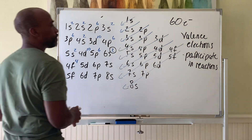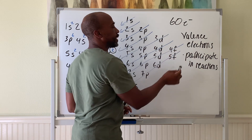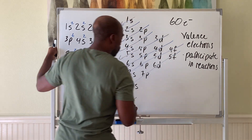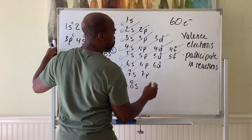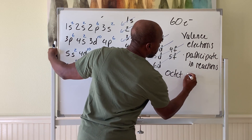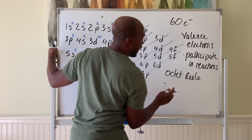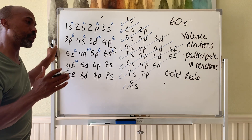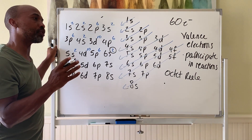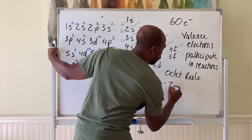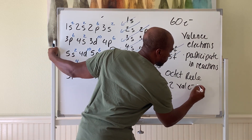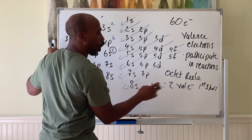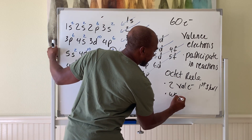The beta electrons are the ones that get involved in reactions, and they operate based on what's called the octet rule. The octet rule states that an element will try to get involved in reactions in order to get its valence shell count to either 2 or 8. It wants 2 valence electrons if it's in the first shell — only the first shell can do this. All other shells want 8 electrons.